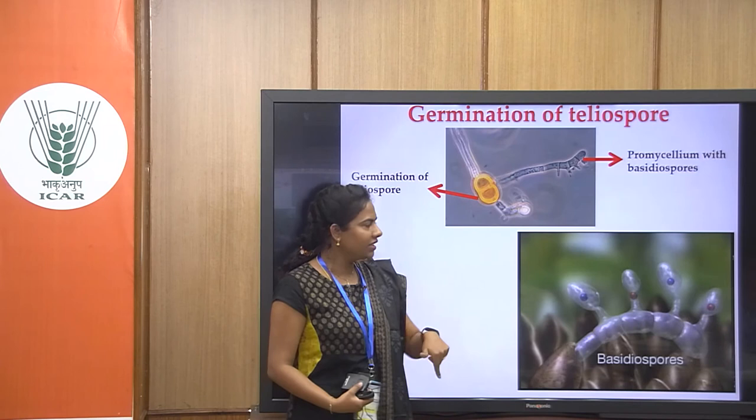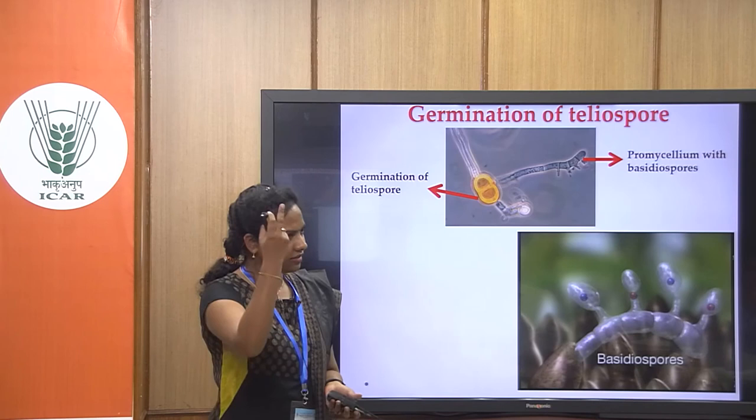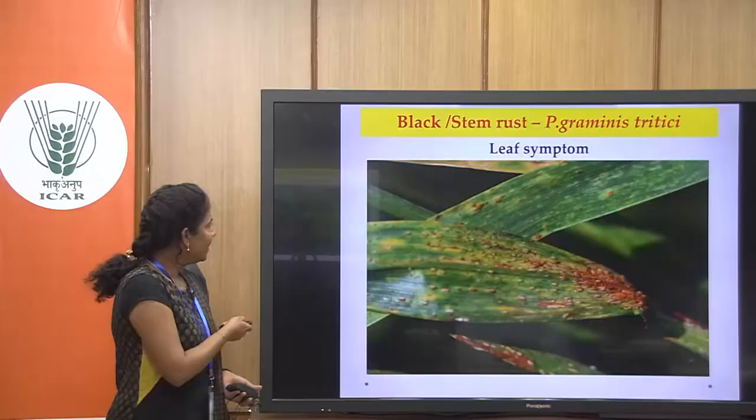As I mentioned, the first spore — spermacia — and the last spore — basidiospores — are uninucleate. These basidiospores do not have the capability of infecting wheat. Since the life cycle must repeat, they infect barberry instead. That completes the cycle.